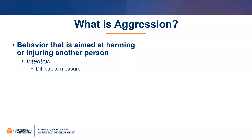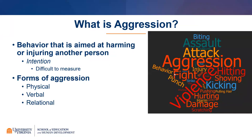I want to point out that aggression can be defined differently and take on some different forms, even within this definition. Aggression can include physical aggression, which is going to be the focus of today's talk. That can include physical acts of harm, including biting, attacking someone, hitting, shoving, or kicking — things that are pretty overt and easy to identify.